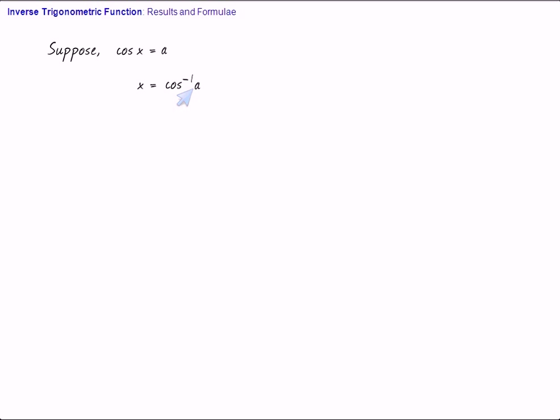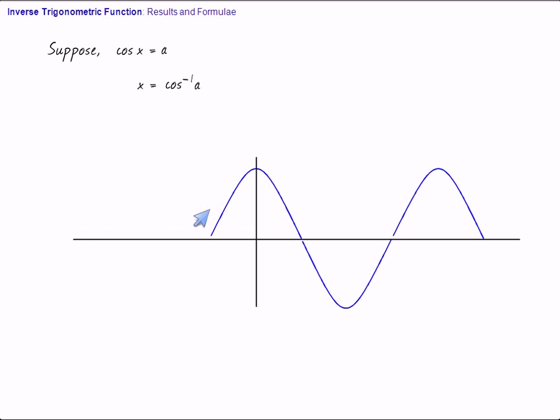Now, what should be this value? Let us examine the graph of cos. This is the graph of cos. This is pi by 2, this is pi, this is 3 pi by 2, this is minus pi by 2.